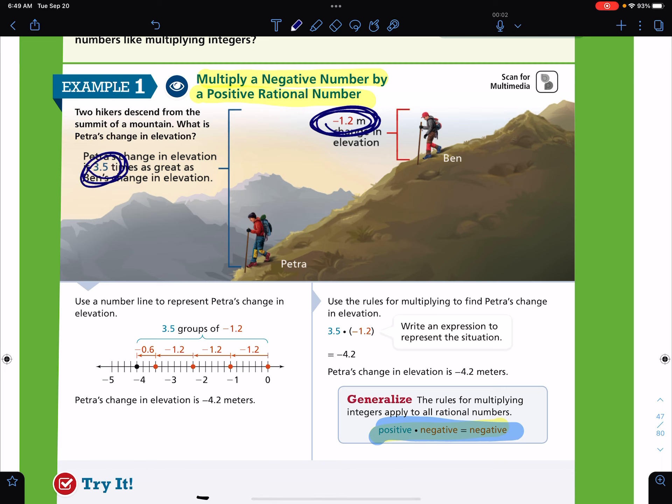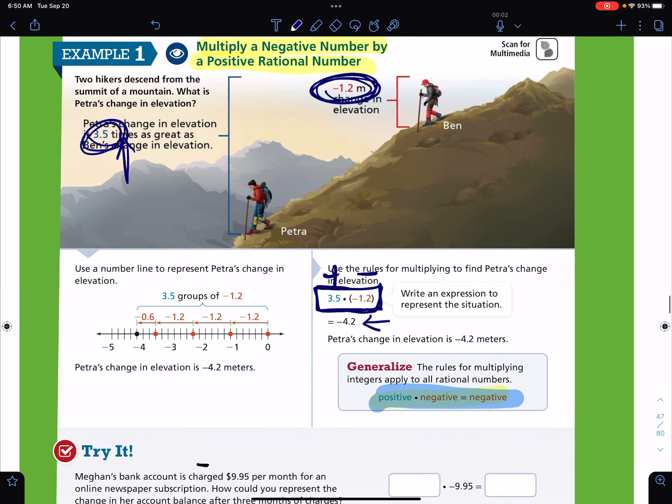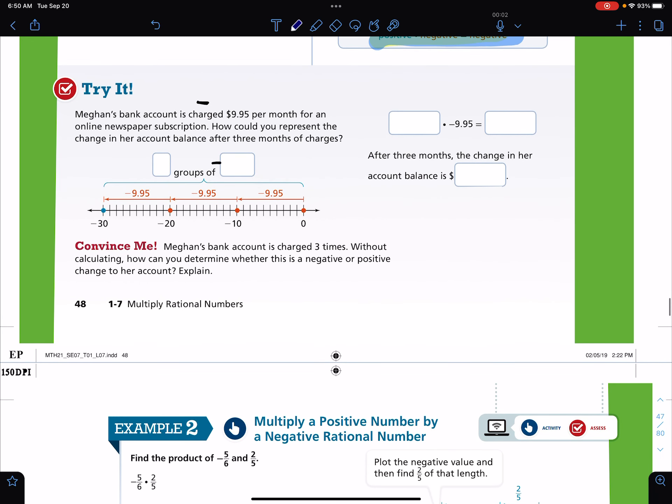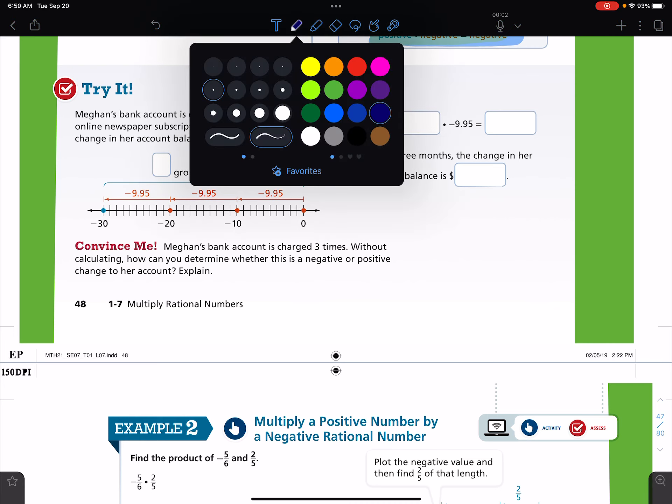So this shows that it's a negative 2 elevation change, but his is 3 times, and so we would do 3 times negative 1.2. That is the equation that they came up with right here from our word problem. And you'll notice that when they multiply them, it still became a negative number. So a positive times a negative will equal a negative. The difficulty is added because we're dealing with multiplying decimals and fractions.